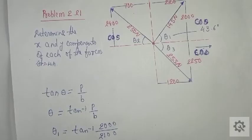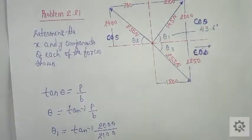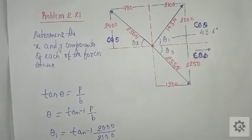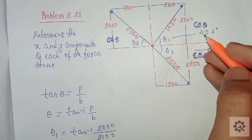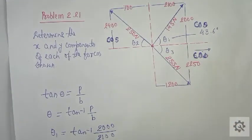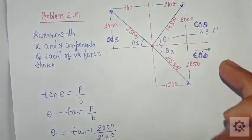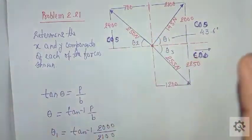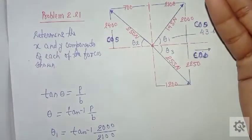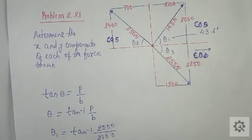The most important aspect is knowing where to write cos and sine — students usually get confused here. Always remember: the front side of the angle will be cos, and the opposite side to the angle will be sine. Remember it.